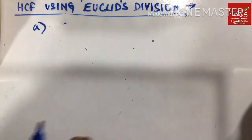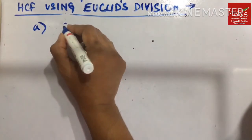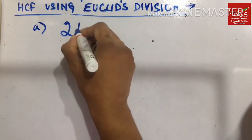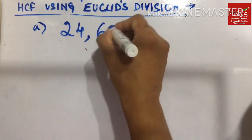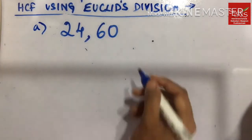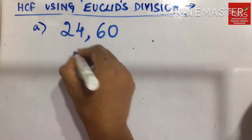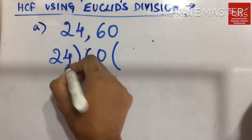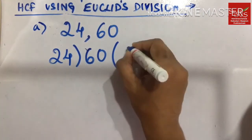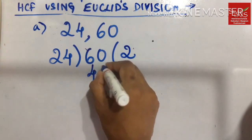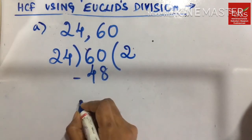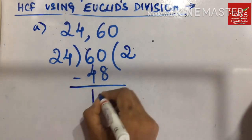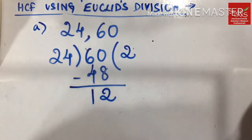So let us now take the numbers 24 and 60 and find the HCF. As usual, we will take the larger number as the dividend and the smaller number as the divisor. 24 times 2 is 48; 24 times 3 is 72, which would be more. So I am using 24 times 2 is 48, and I have ended up with a remainder.